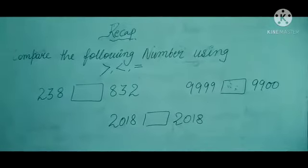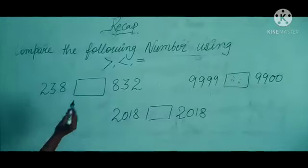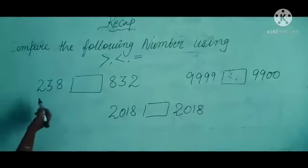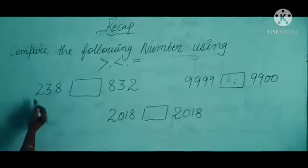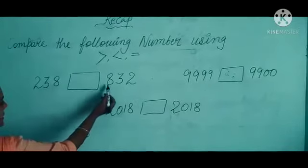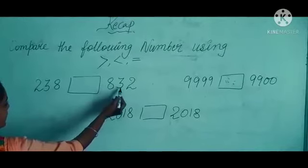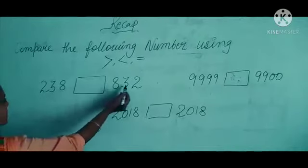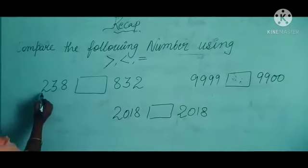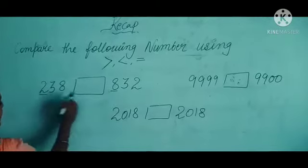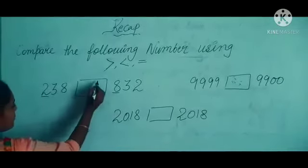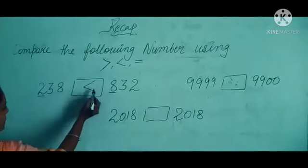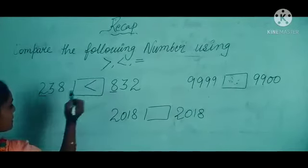Next question is: compare the following numbers using this sign. You have to use this sign. For example, here is 238 and here is 832. So which one is greater — 238 or 832? We will see the first digit. Here is 2 and here is 8. The greater is 8. So we will put the sign like this — the mouth is open because this is the greater sign.